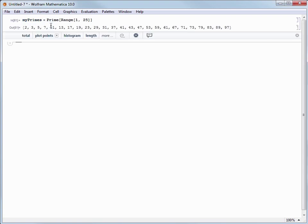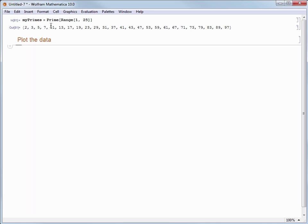Now let's make a new subsection with Alt 5 called plot the data. And then we will plot the data using the function list plot, open square bracket and then choose my variable of my primes and then close the square bracket and hit shift enter.